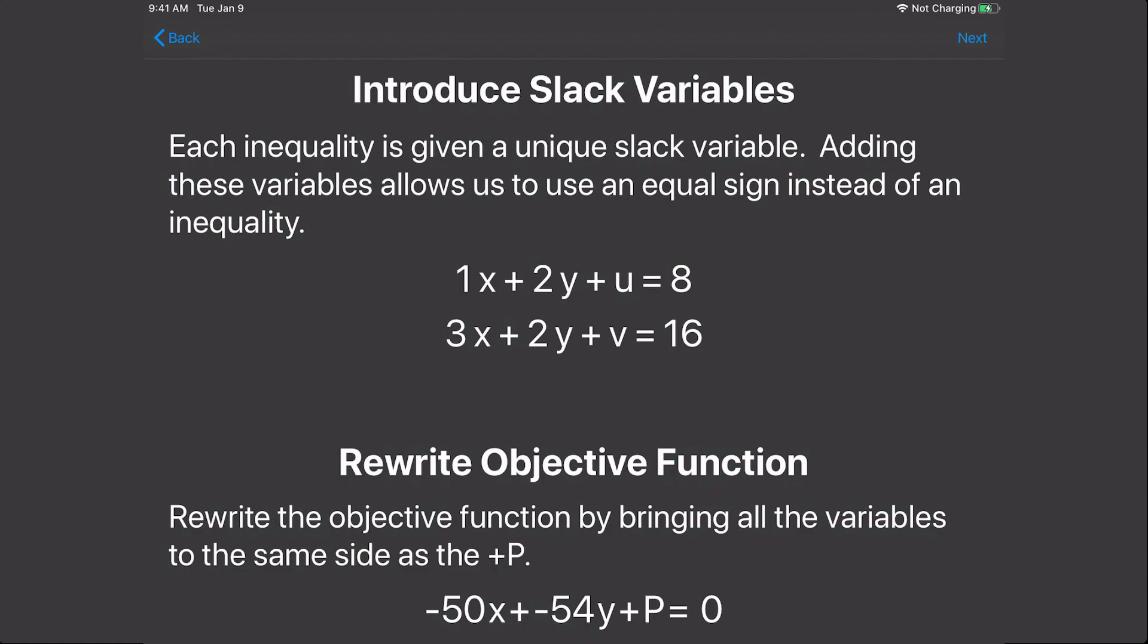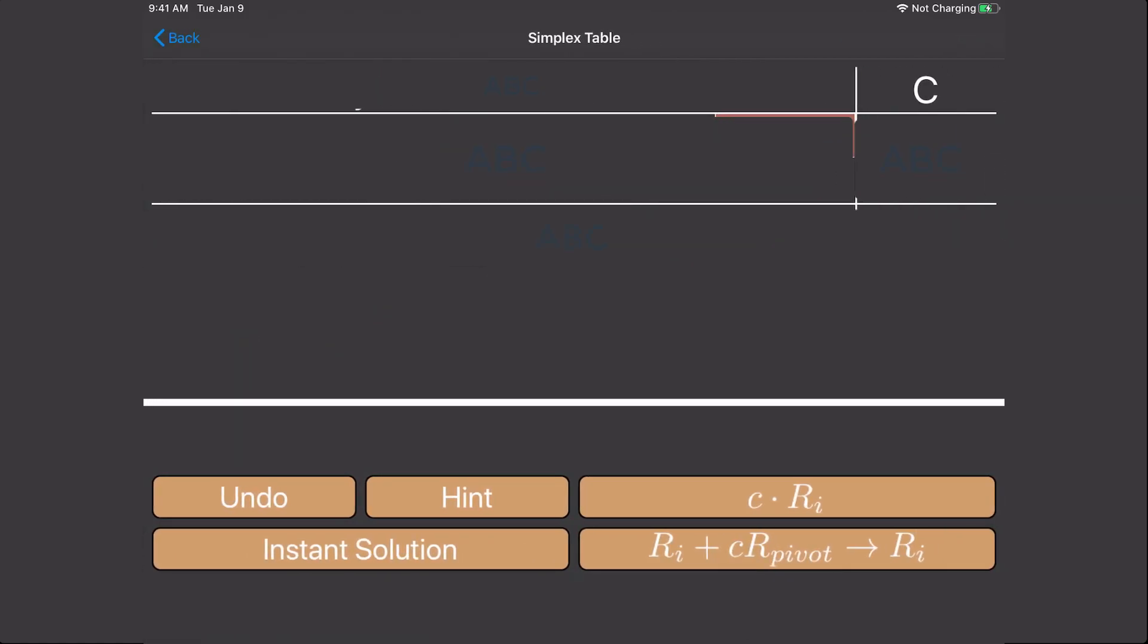The simplex table is broken up into three parts. The first part is the very top. It contains all the variables in the problem. So that's going to be the x, y, u, v, p, and then the constant column.